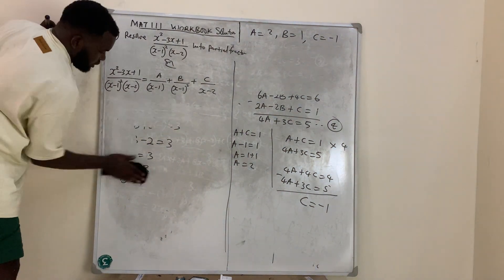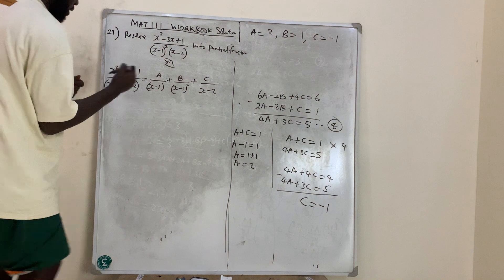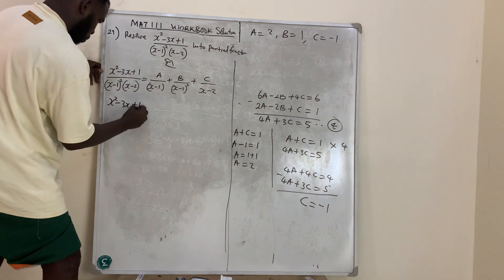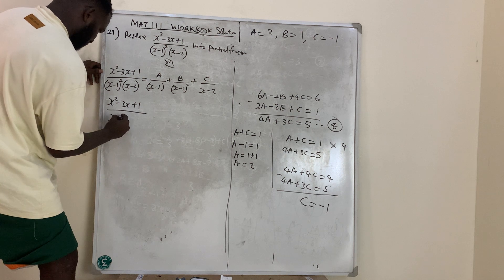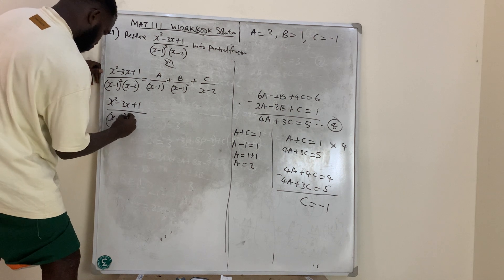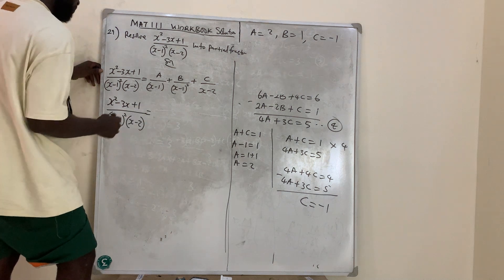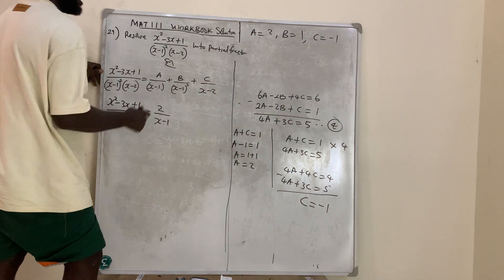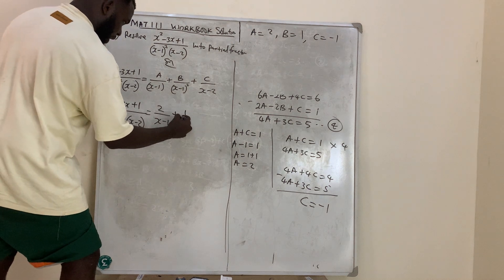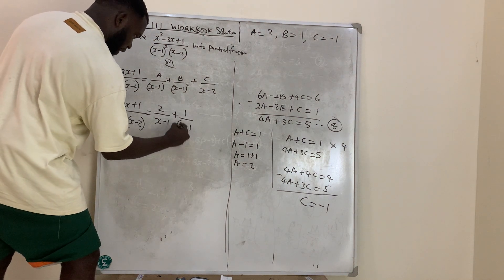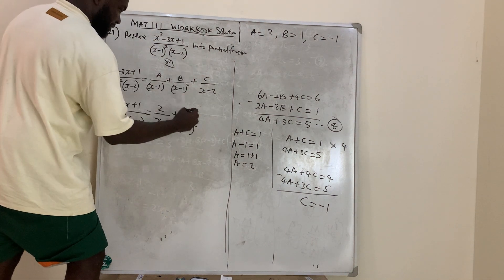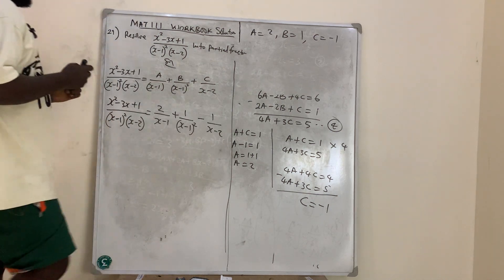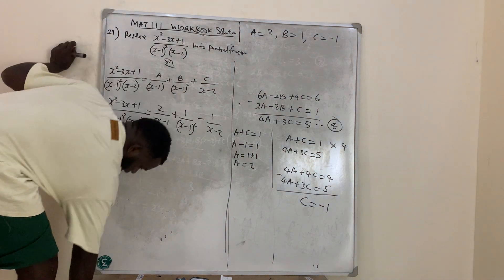Come back and substitute. (x² − 3x + 1) over [(x−1)²(x−2)] equals 2 over (x−1) plus 1 over (x−1)² minus 1 over (x−2). That is the answer for question number 29.